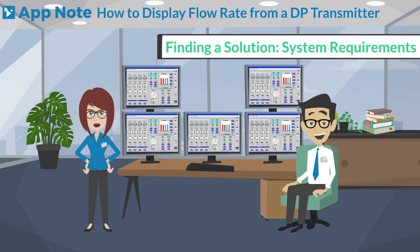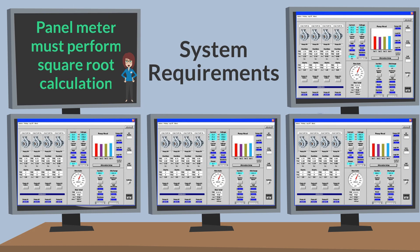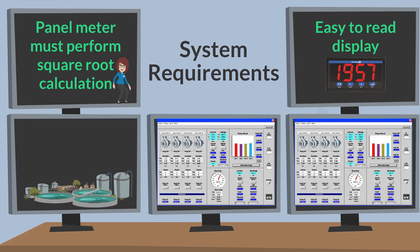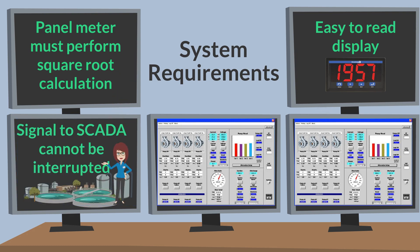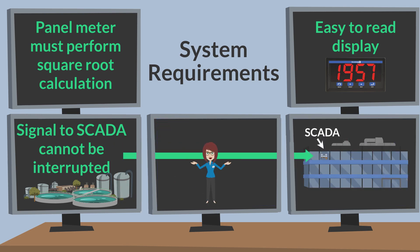Let's take a look at the system requirements. The panel meter must be able to perform a square root calculation on the incoming signal to display the flow in gallons per minute, and the display must have large easy-to-read characters. In addition, the signal to the SCADA system cannot be interrupted, even if the display is down for any reason.